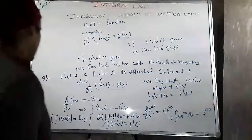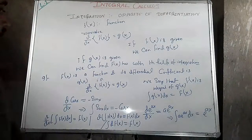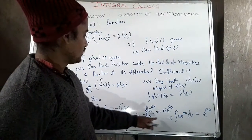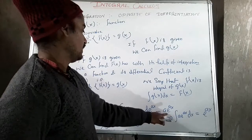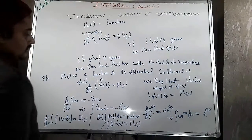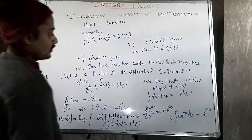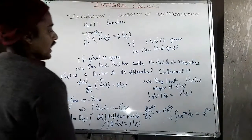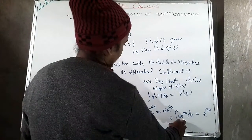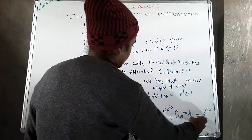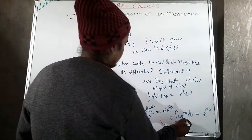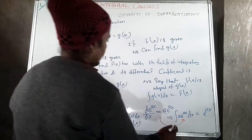Also, d/dx of e^(ax) equals a·e^(ax). This is the differentiation of e^(ax) with respect to x. And the integration of e^(ax) dx gives e^(ax)/a. This is an example of a particular integral.